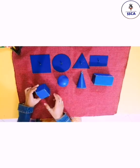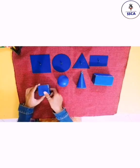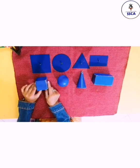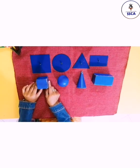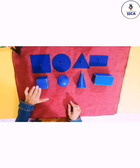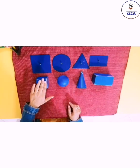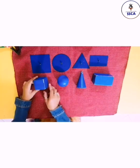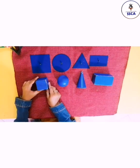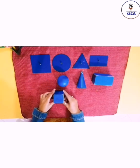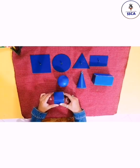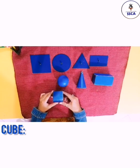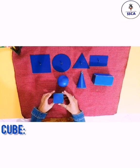This shape looks like a square, but it has a height, so this shape is a solid shape. What is its name? Its name is cube — C-U-B-E.